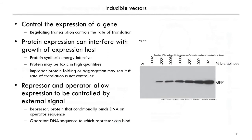Another feature of expression vectors is that expression is typically inducible. You can regulate the transcription and that will control the rate of translation. The reason why you want to do this is because protein synthesis can affect the growth of the cell and is very energy intensive. A protein might be toxic to the cell in too high a concentration, or it might misfold or aggregate if the rate of transcription and translation is not controlled. To deal with these concerns, you may want to have a signal for cells to start producing proteins at the appropriate time and in the appropriate amount. The example here is of green fluorescent protein, GFP, that is being expressed using an expression vector that is inducible with the sugar arabinose. With more arabinose added to the media, the more expression you have of this gene. What you are seeing here is a stained protein gel showing GFP.